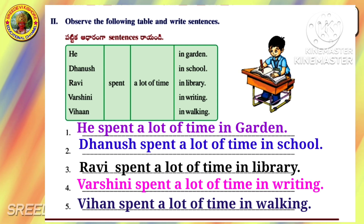Add a suitable prefix — un-, dis-, il-, im-, in- — to the base words to get opposite words. Advantage: Disadvantage. Moral: Immoral. Polite: Impolite. Visible: Invisible. Legal: Illegal. Available: Unavailable.